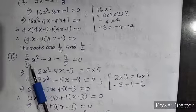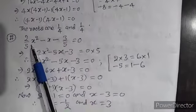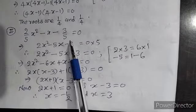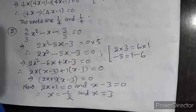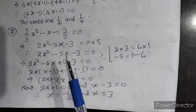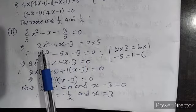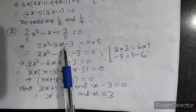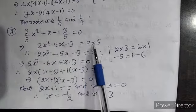Now, this is your next question, number 2. 2 by 5x square minus x minus 3 by 5 equals 0. Multiplying both sides by 5, you will get 2x square minus 5 into x minus 3 minus 3 equal to 0.